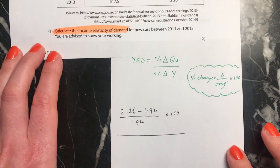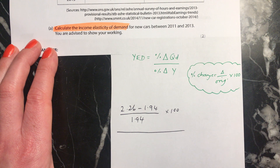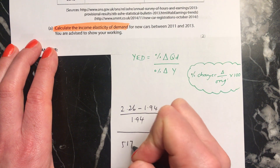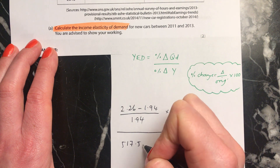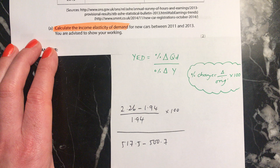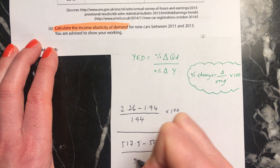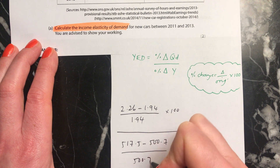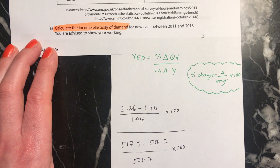The bottom line is the income, which should be 517.5 take away 500.7, divided by the original, 500.7, times 100.